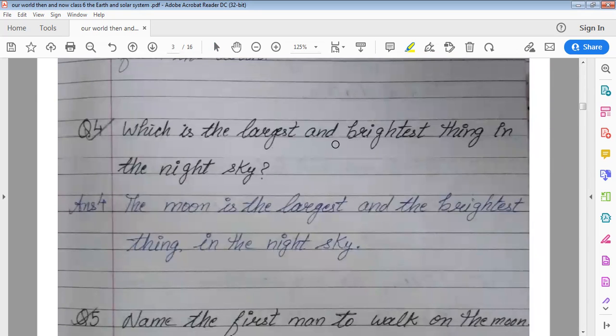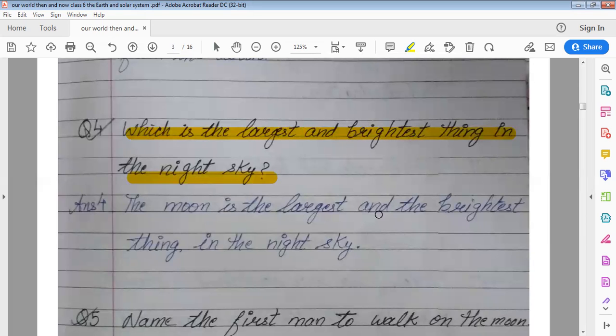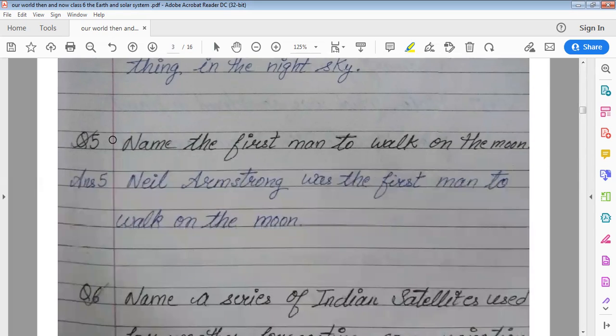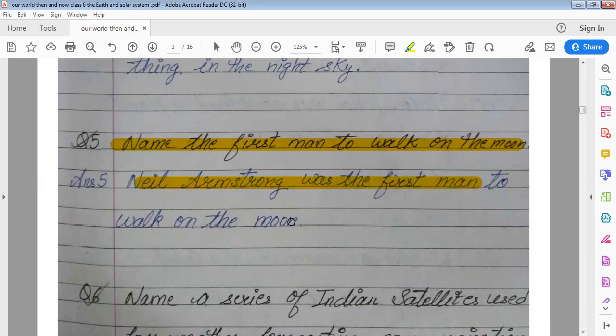Which is the largest and brightest thing in the night sky? The moon is the largest and the brightest thing in the night sky. Name the first man to walk on the moon. Neil Armstrong was the man to walk on the moon.